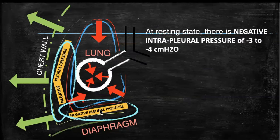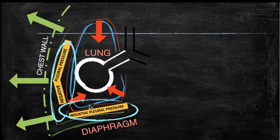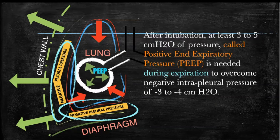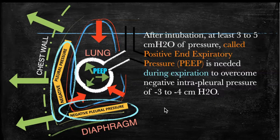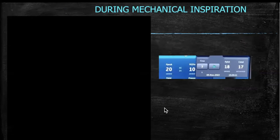At resting stage during expiration, minus 3 to minus 4 centimeters of intrapleural pressure is present. When we intubate somebody, we need to apply a certain pressure during expiration to counter that minus 3 to minus 4 centimeters of intrapleural pressure — around 3 to 4 centimeters of water — and that is the positive end-expiratory pressure, the continuous distending pressure applied during expiration to keep the alveoli open during mechanical ventilation.